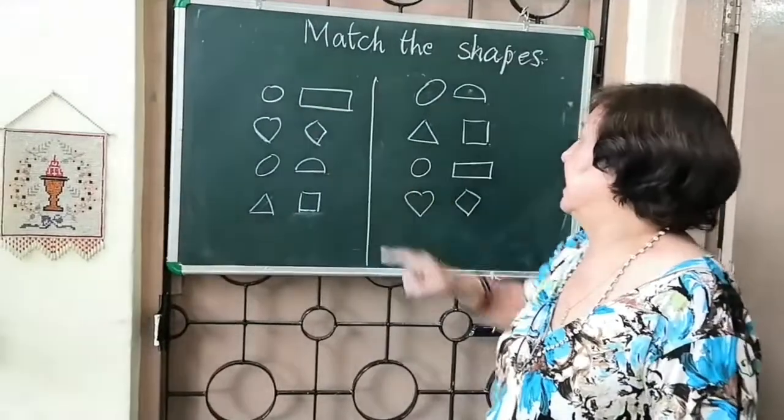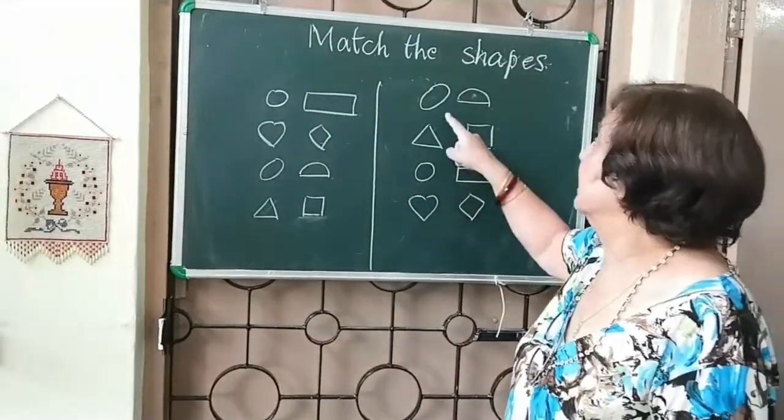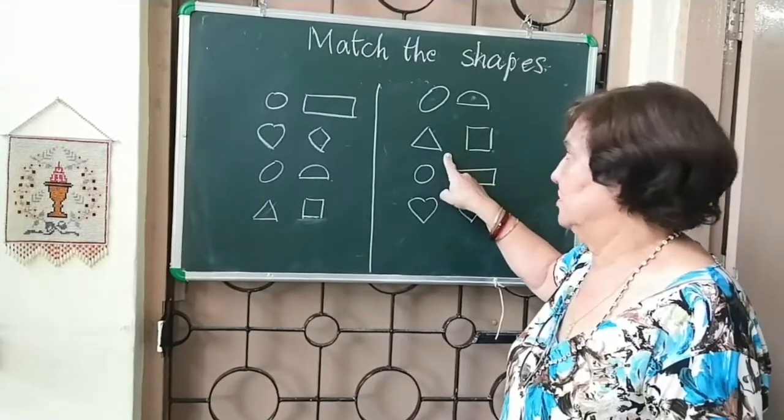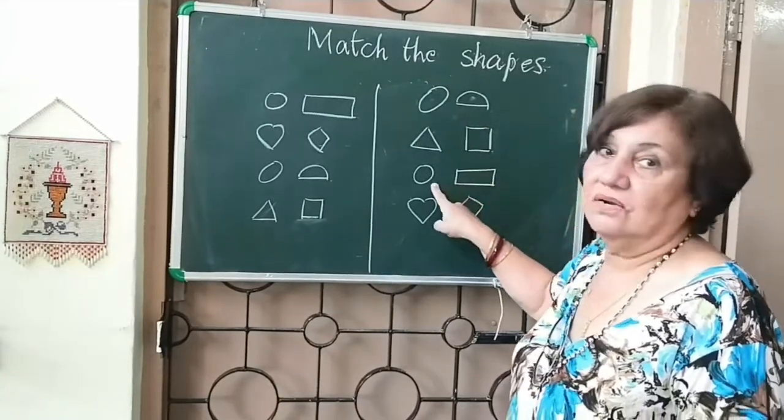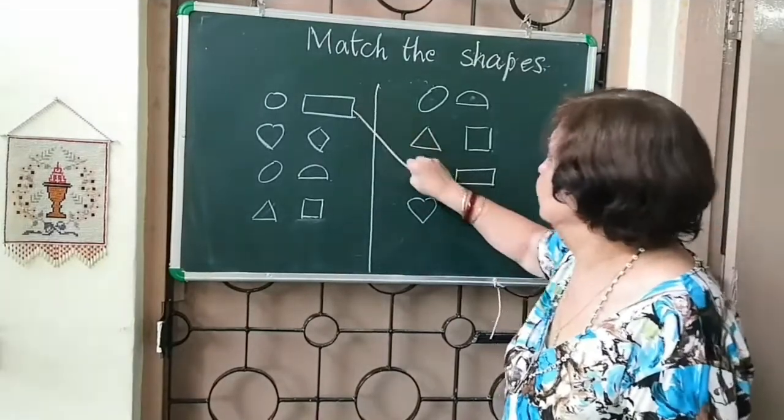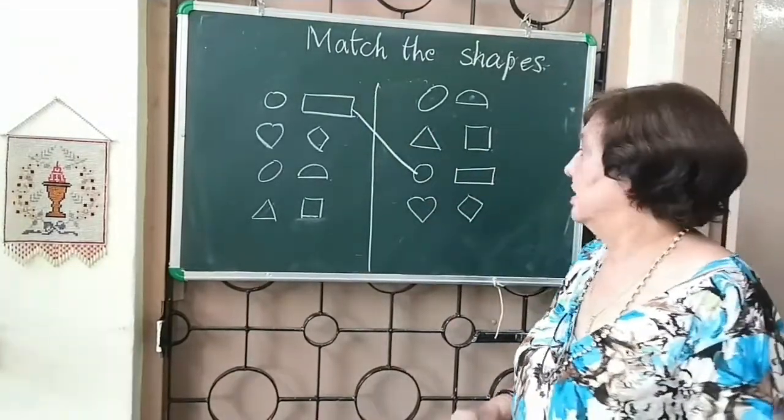And the last one that I'm going to draw is a heart and a diamond now let's see circle and rectangle now let's see circle and rectangle where is a circle and rectangle this is not a circle and rectangle. What is this this is a circle and a rectangle so match the two.